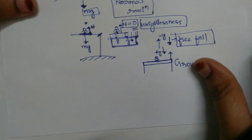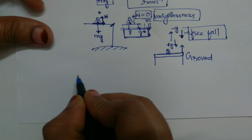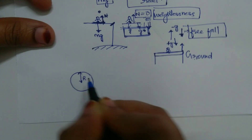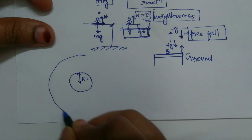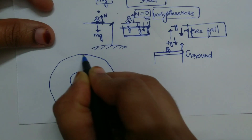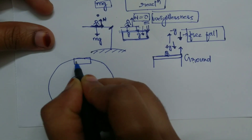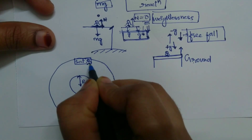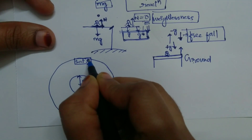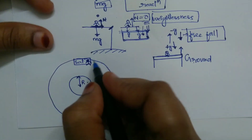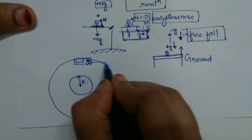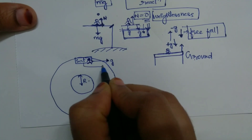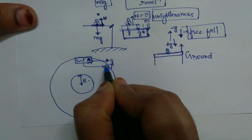Let us consider another example. Suppose this is the earth and the radius of the earth is r, and let us consider there is an orbit. In this orbit, the satellite is moving and there is one astronaut present in the satellite. The acceleration due to gravity of the astronaut is g, and the acceleration due to gravity of the satellite is also g.